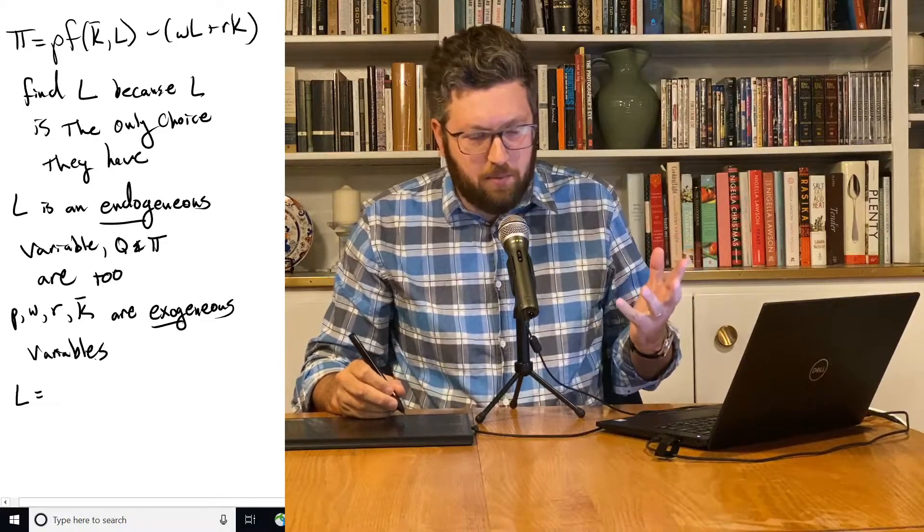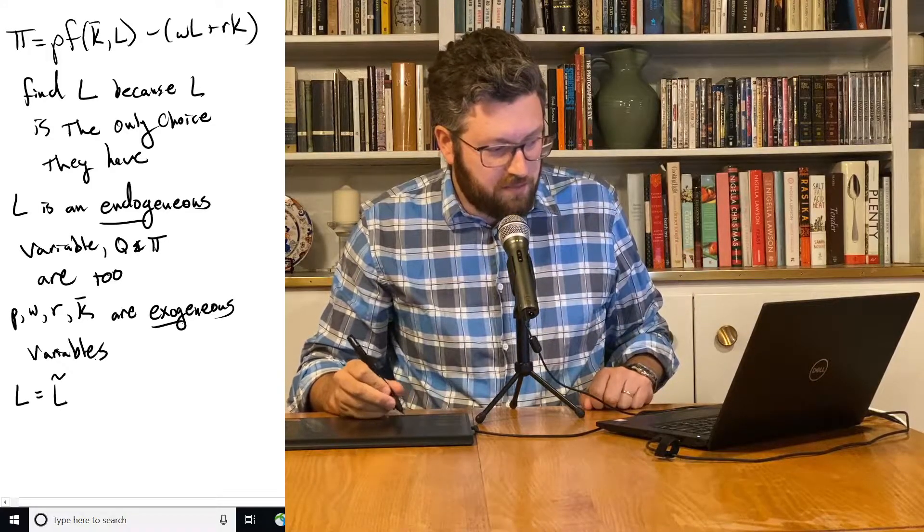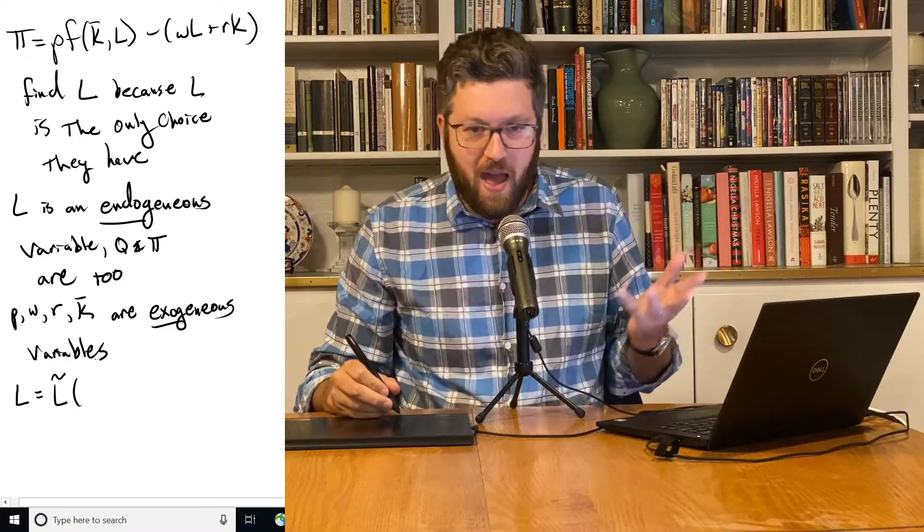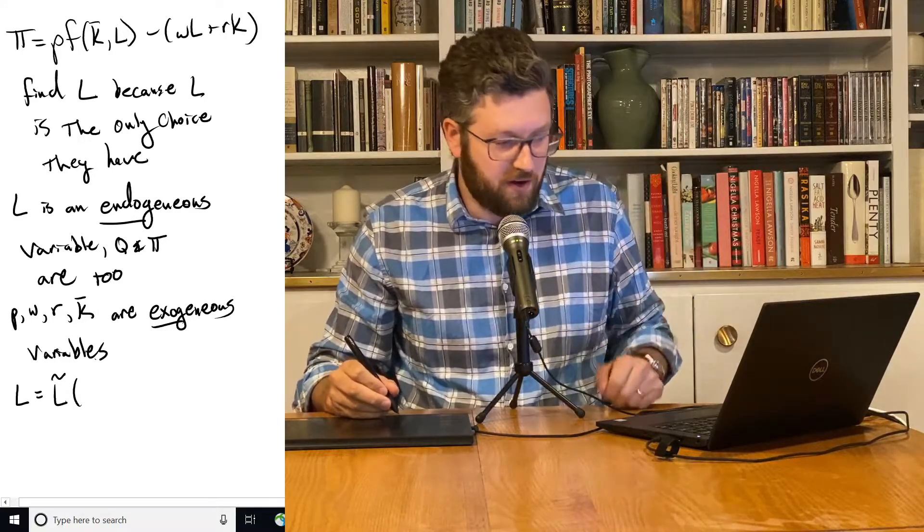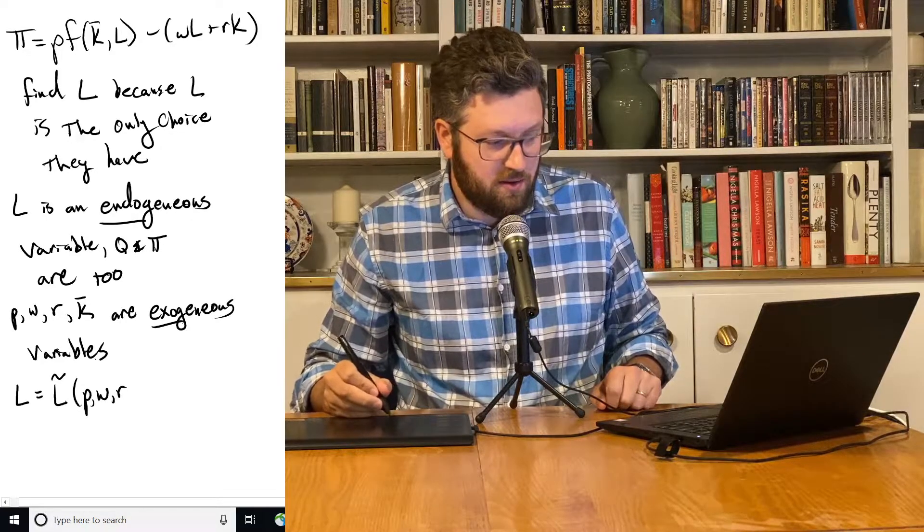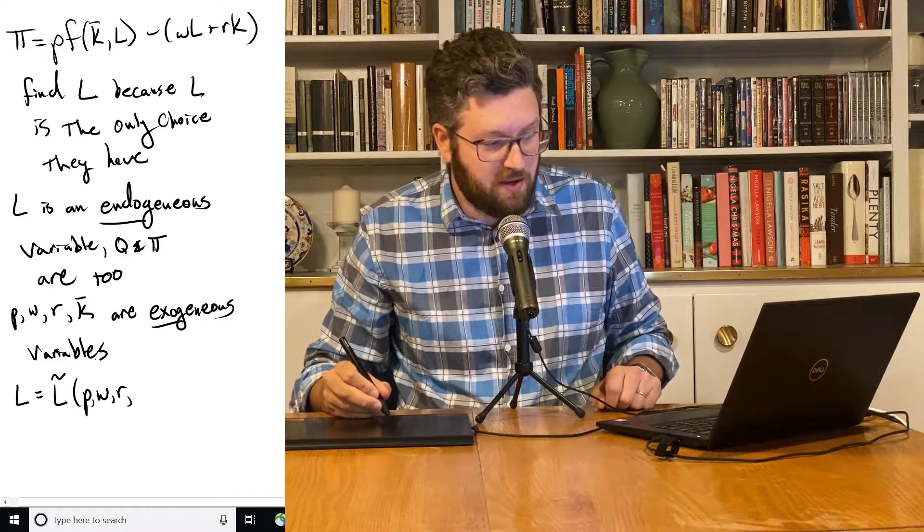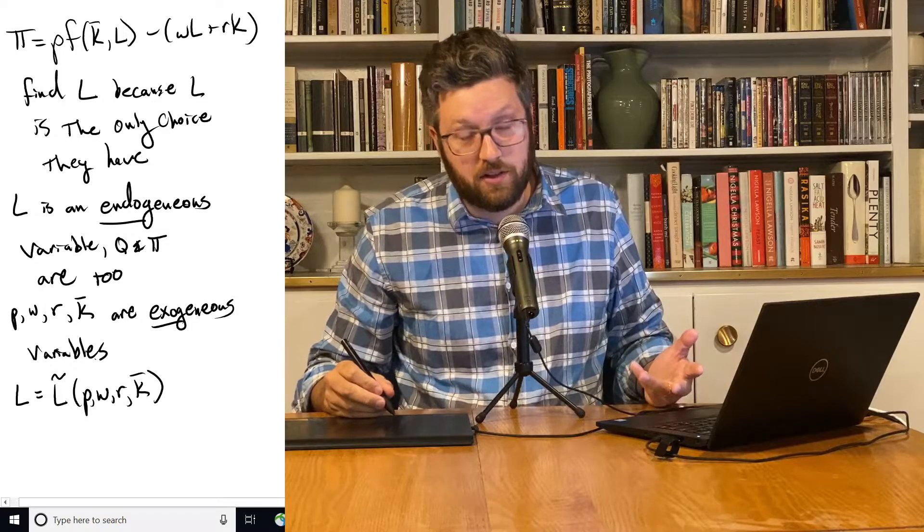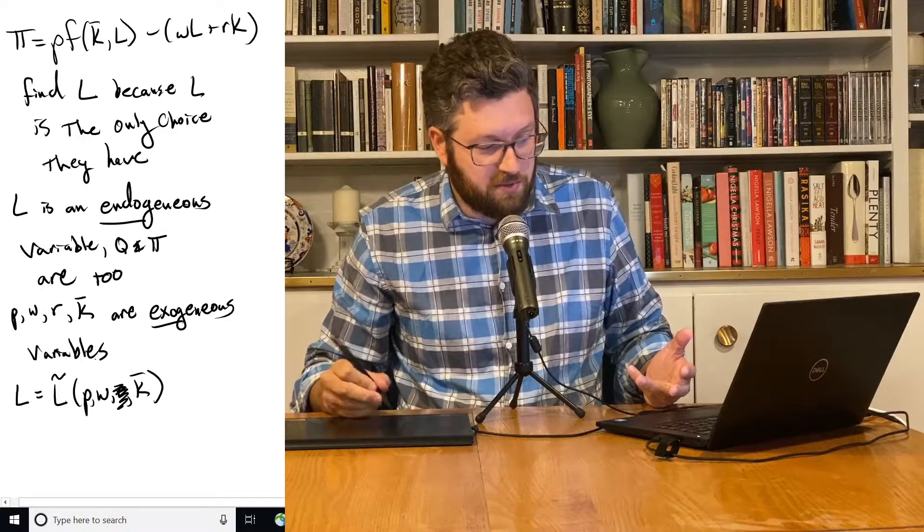The amount of labor we choose will turn out to be some kind of function, which I'm calling L with a squiggle over it. But you could use an F or whatever. It's just a function. And inside that function are the price, the wage rate, the capital rental rate maybe, and the capital stock. In this case, actually, this guy's not going to turn out to be in there.